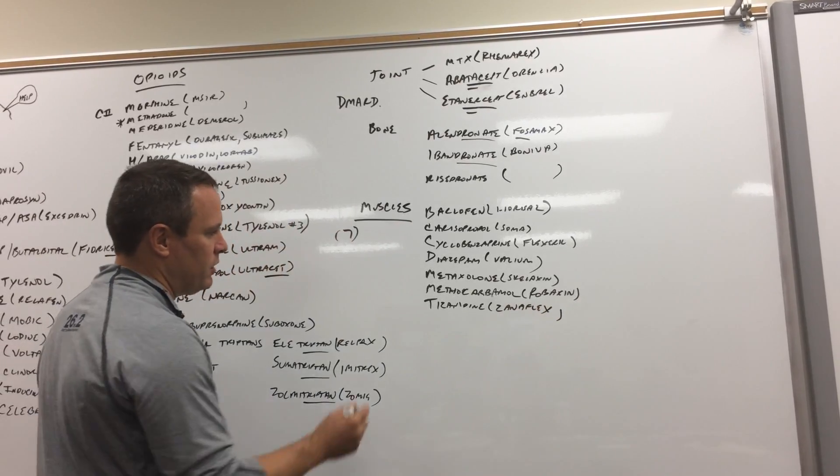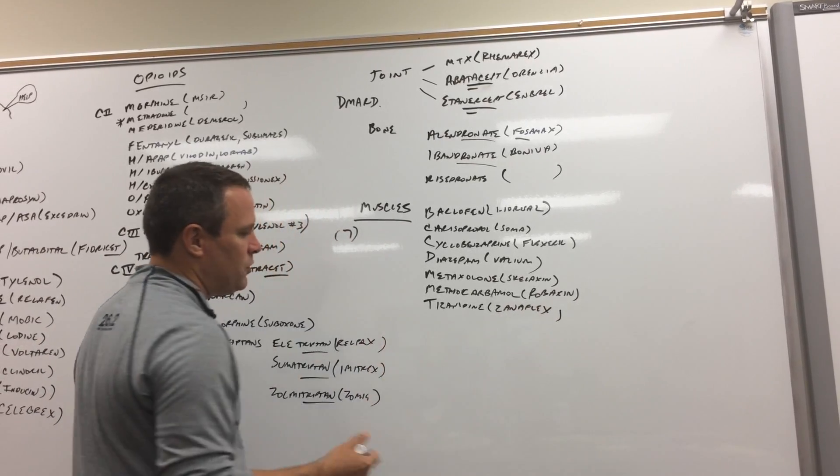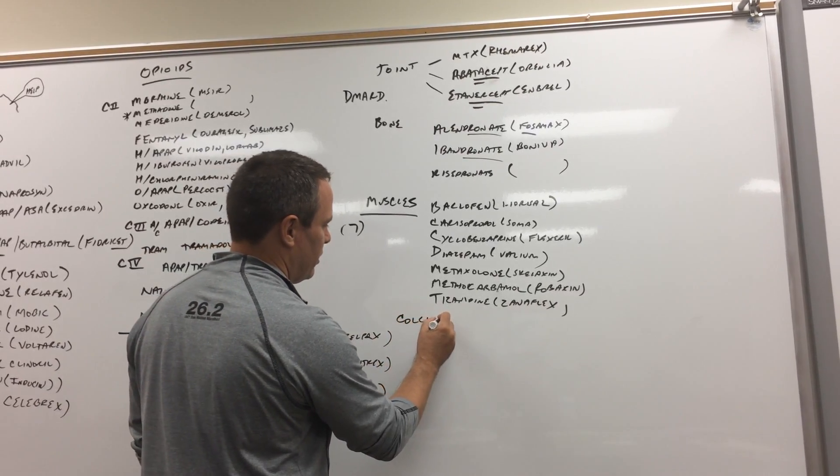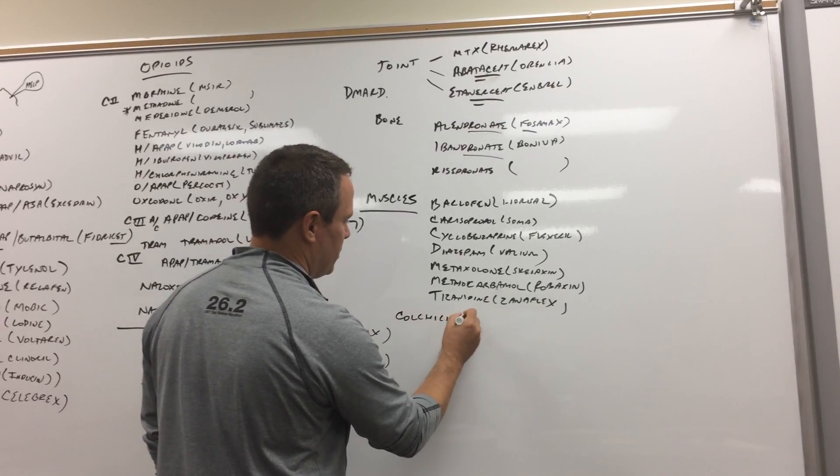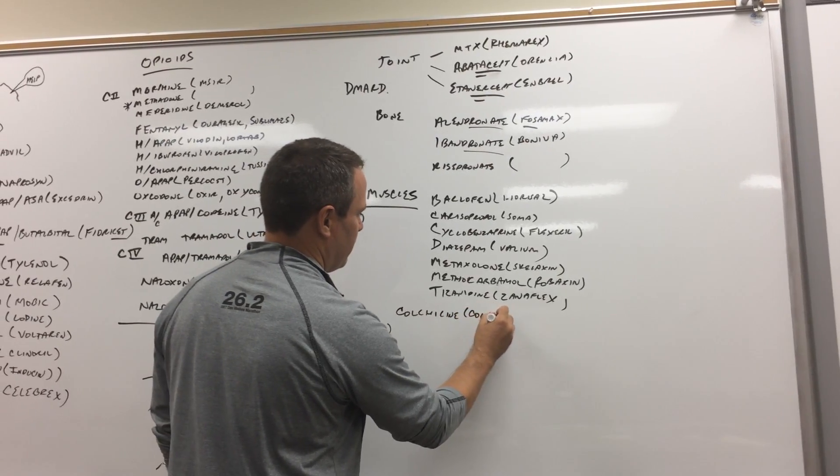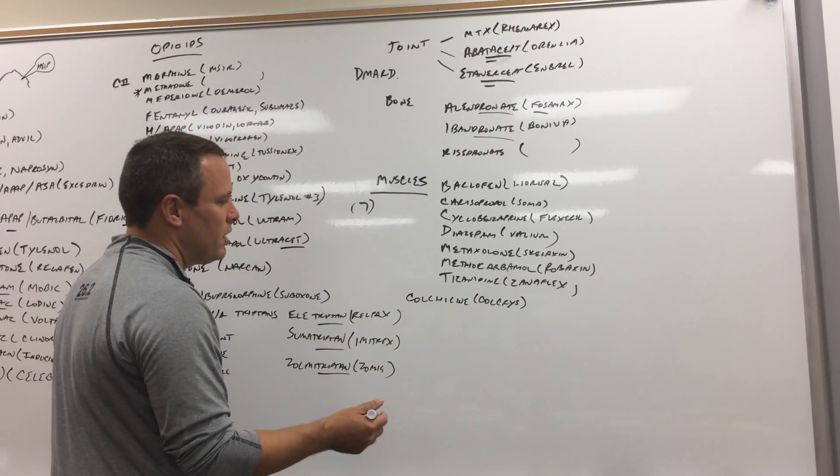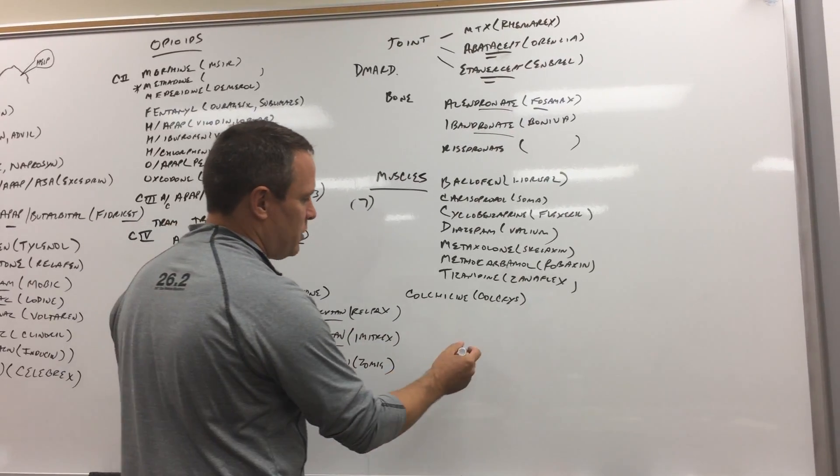And then gout. You can think of it in two ways. You use something acute and you would use the NSAIDs or colchicine which is Colcrys. And I think of crystals, calm down the crystals.